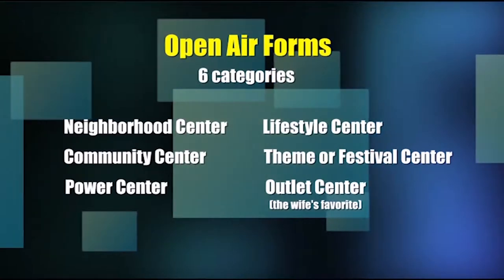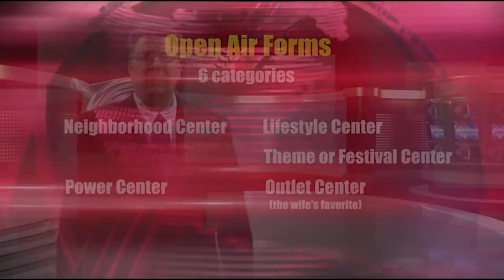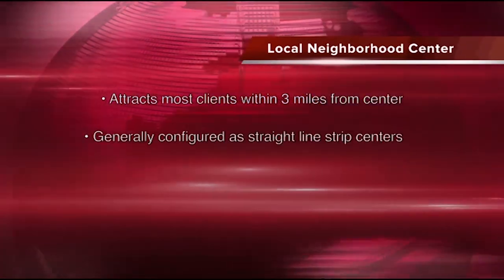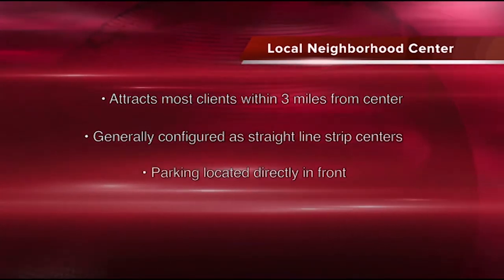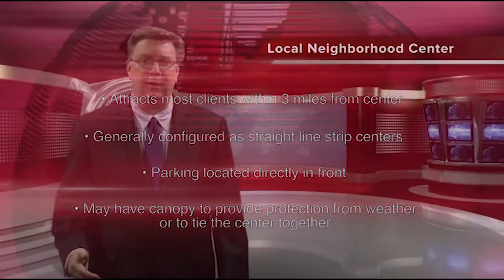The main differences between the first three — neighborhood center, community center, and power center — revolve around the size of the center and the radius they draw traffic from. The local neighborhood center attracts most clients from within 3 miles of the center. They're generally configured as straight-line strip centers with parking located directly in front, and may have a canopy or facade to provide shade and protection from inclement weather. The tenants tend to be stores catering to the daily needs of the local community. According to the ICSC, approximately half of these centers are anchored by a supermarket, while about a third are typically anchored by a drug store.